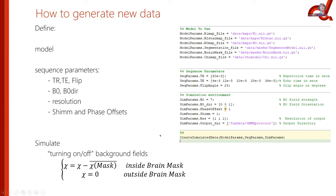What's very interesting about using a numerical phantom in the context of QSM is that you can turn background fields on and off. You can create images with no susceptibility outside the brain mask — no skull, no air, just the brain in a bath of water — or something more realistic. This lets you test different steps of QSM processing and background field removal.